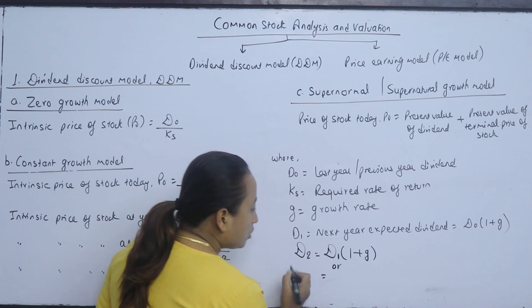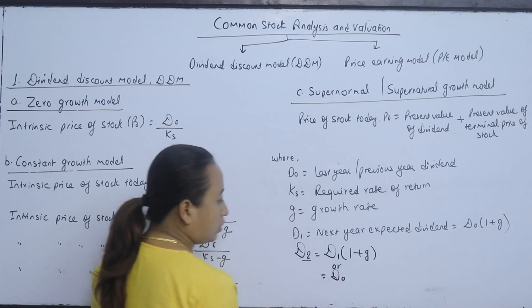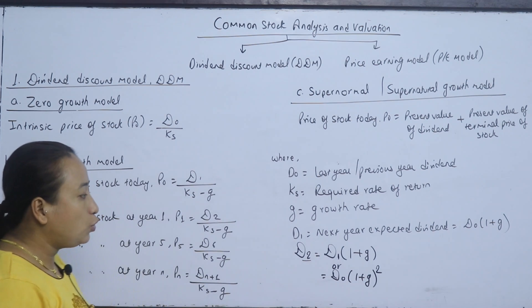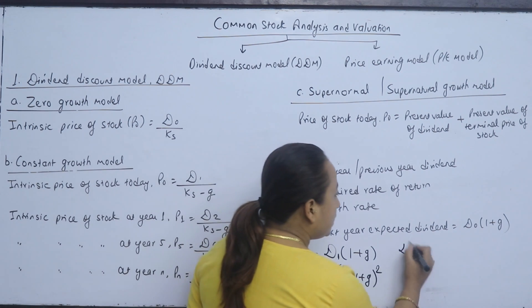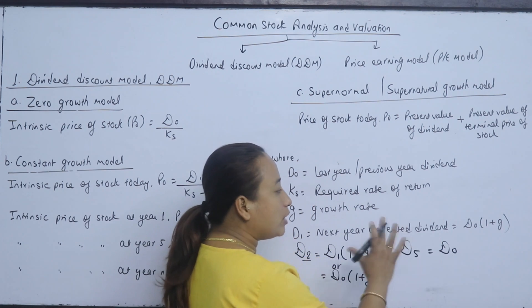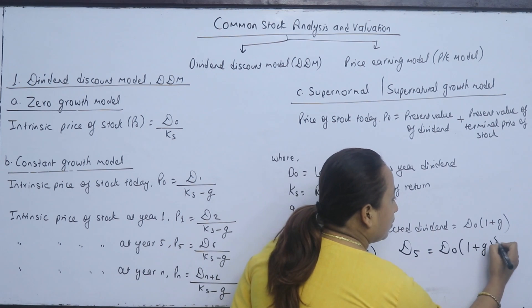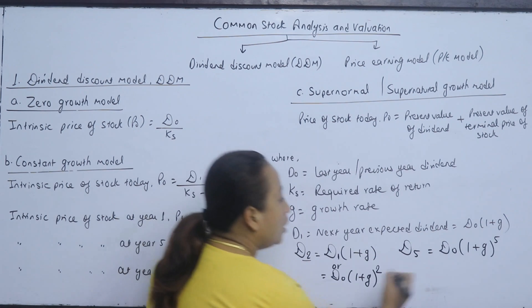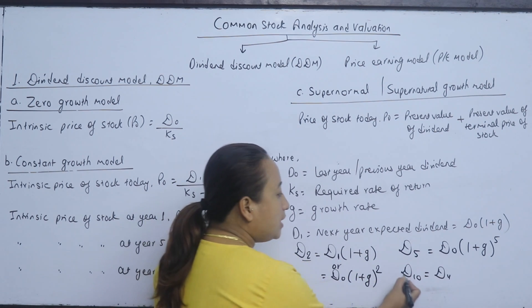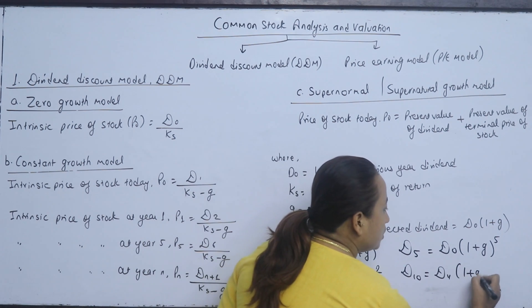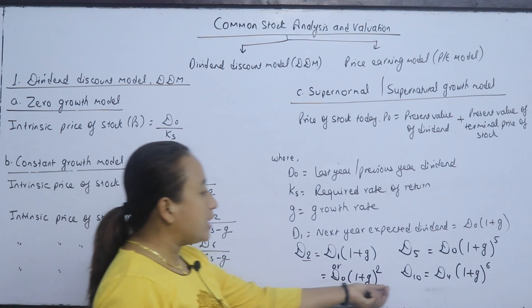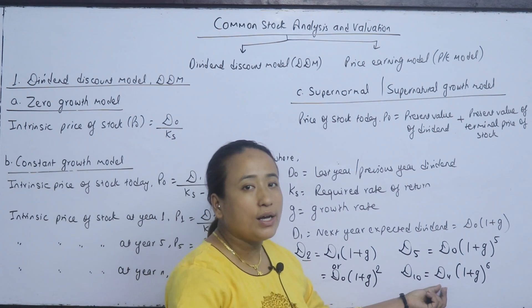Suppose we have D2, then D2 divided by D1 gives the growth rate. Or suppose D2 equals D0 raised to the power 2. Suppose D5 equals D0 raised to the power 5. Suppose D10 equals D4, then (D10/D4) gives a power of 6. So from dividends at two different periods, we can derive the growth rate.